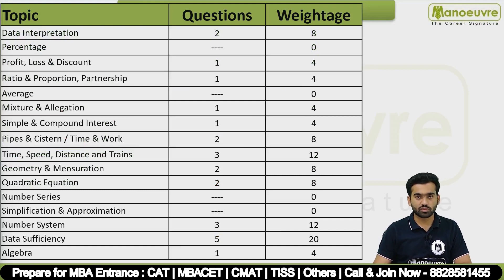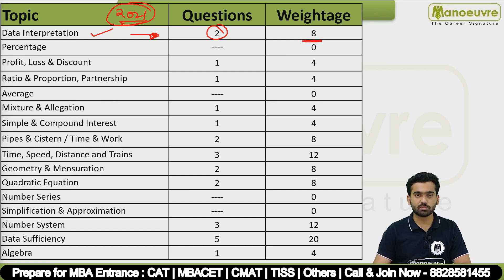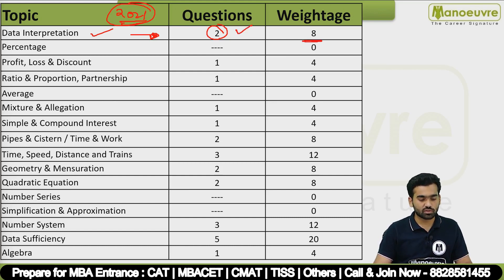Now let's discuss the important point — topic versus weightage. In the 2021 CMAT paper analysis, Data Interpretation had only 2 questions for 8 marks. There was no question related to Percentage, so 0 marks for that topic.